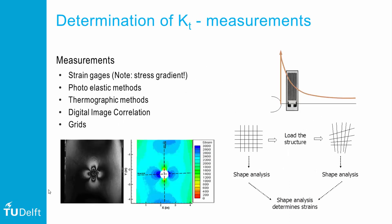To determine stress concentration factors in actual components, one may want to measure the strain gradient in order to estimate KT. There are different methods to capture stresses or stress fields, but the peak stress at the notch root is hard to determine, particularly with local measurements such as strain gauges. If one takes two or three strain gauges, one may approximate the gradient and extrapolate it towards the notch edge to estimate KT. Even with strain field measurements, stress gradient extrapolation towards the edges is required.